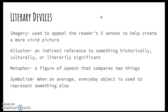An allusion — with an A, not an I — is a direct reference to something historically, culturally, or literarily significant. Basically, it's when one piece of text — a book, a novel, a poem, what have you — references something historically, culturally, or literarily significant that has happened before. And we're going to see this in our poem.